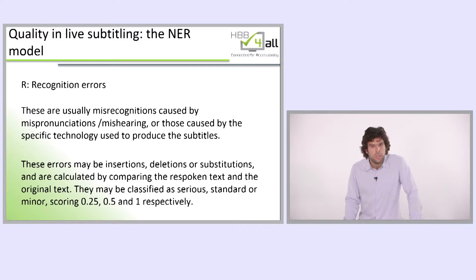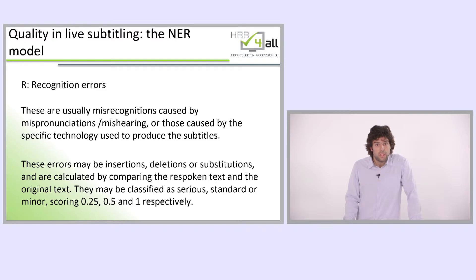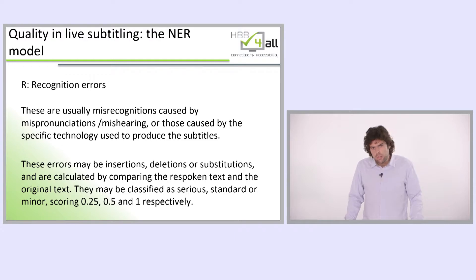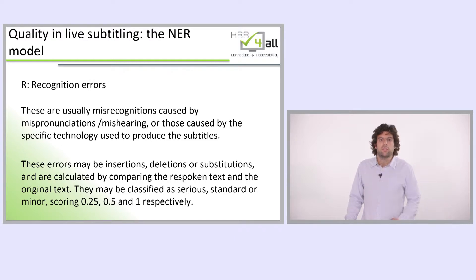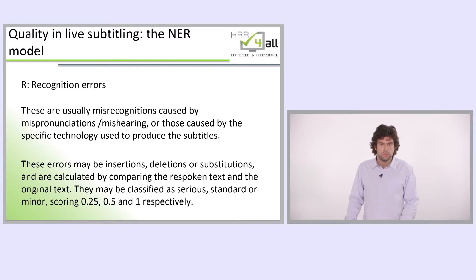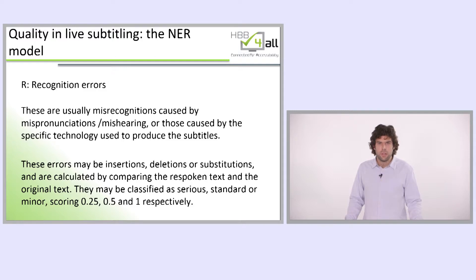Recognition errors are usually misrecognitions caused by mispronunciations, mishearing, or caused by the specific terminology used to produce the subtitles. These errors may be insertions, deletions, or substitutions, and are calculated by comparing the respoken text and the original text. They may be classified as serious, standard, or minor, scoring 1, 0.5, and 0.25 respectively.